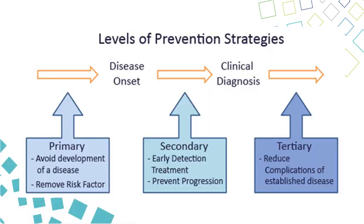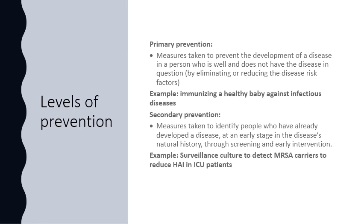Levels of prevention: Prevention is defined as the plan for measures taken to prevent the onset of disease or other health problems before the occurrence of an undesirable health event. There are three levels of prevention. Primary prevention involves measures that prevent the onset of illness or injury before the disease process begins, with examples including immunization and regular exercise. Secondary prevention involves measures that lead to early diagnosis and promote treatment to prevent more severe problems from developing; health educators and practitioners can help individuals develop skills for detecting disease in early stages.